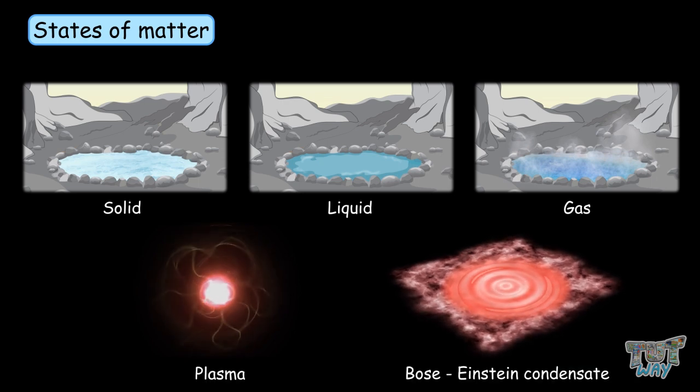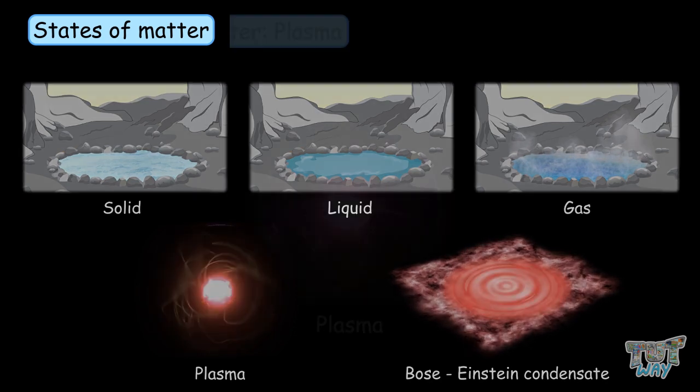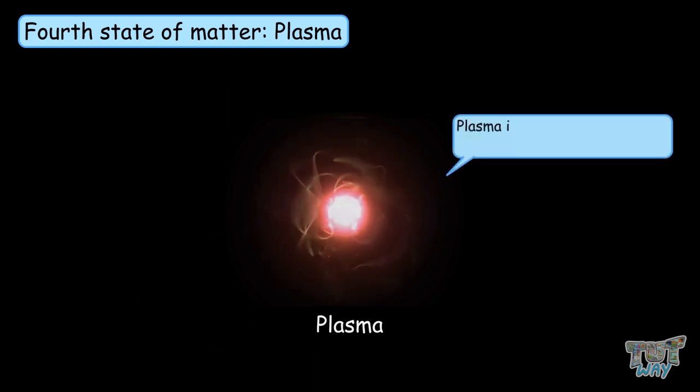Now, let's have an introduction of these new states of matter. We are going to learn about the fourth state of matter: plasma. Plasma is a high-energy, gaseous state of matter.